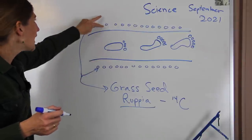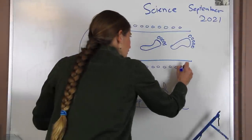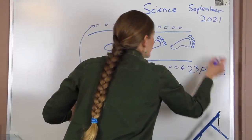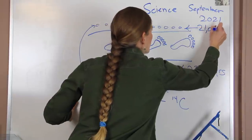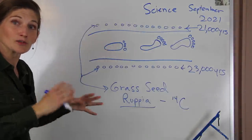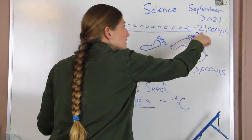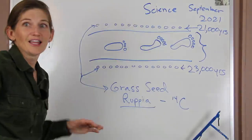The age below, the older layer, was 23,000 years, and the seeds above were 21,000 years. So we know that the footprints, because they're found in between these two layers, were put down between 21,000 years ago and 23,000 years ago. That's pretty cool.